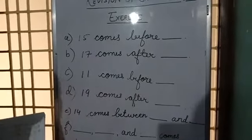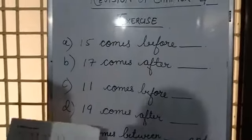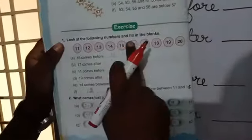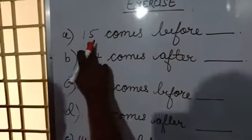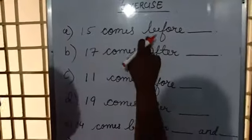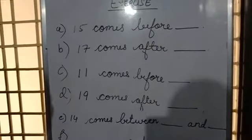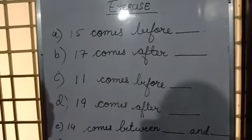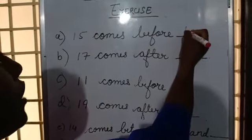Let's do the exercise. See the first one. This exercise is in your maths book, on page number 24. Look at the following numbers and fill in the blanks. First one: 15 comes before. Which number will come? 15 comes before 16.